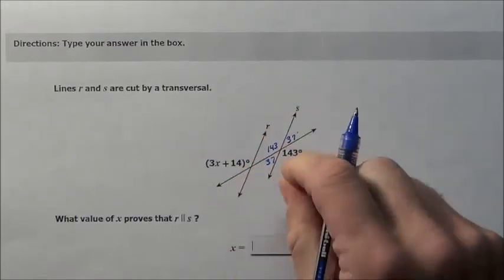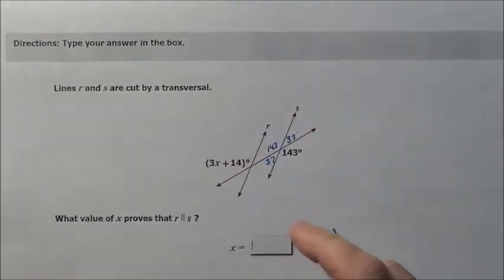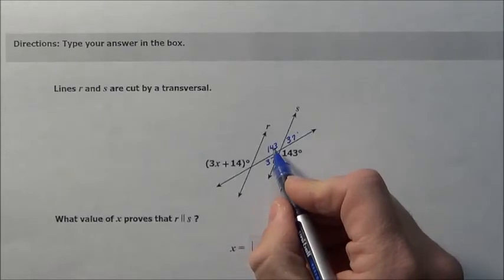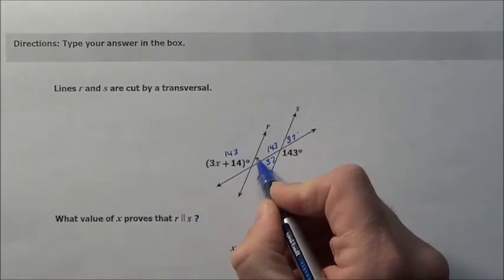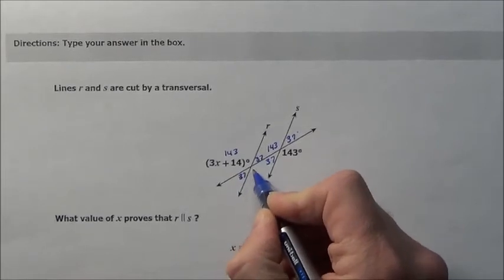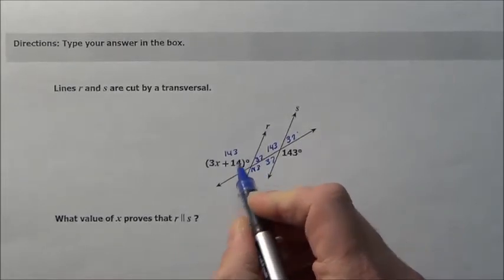And then if R and S are parallel, you can pick these up and boom, put them all right here. So this top left says 143, so this top left would be 143, this would be 37, that would be 37, and that would be 143.